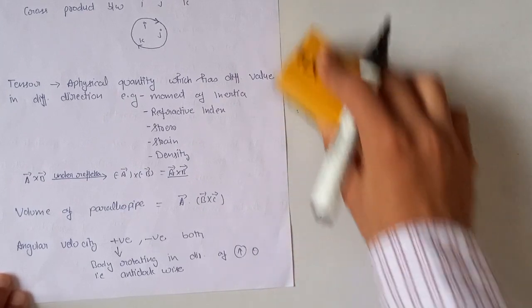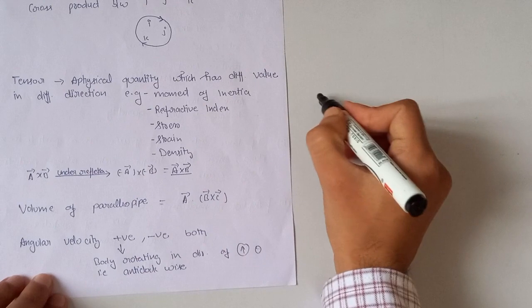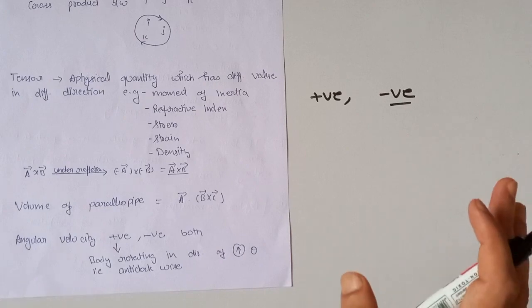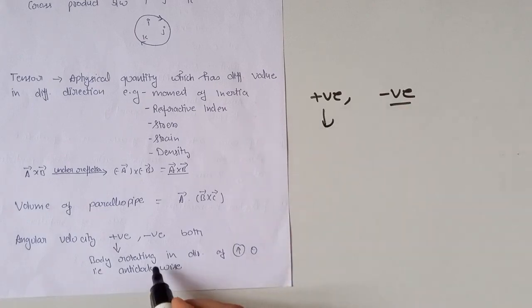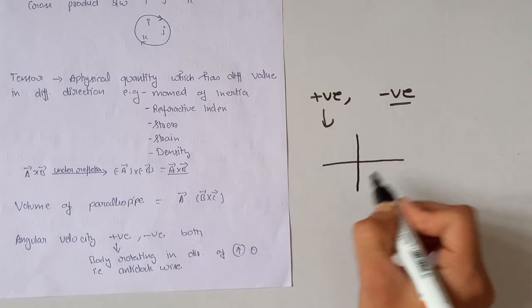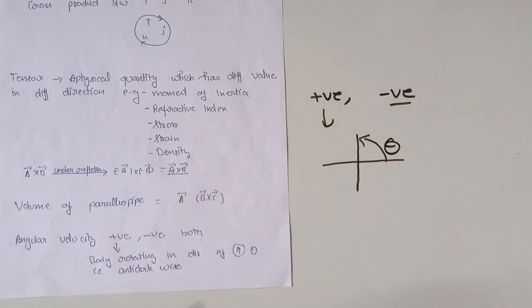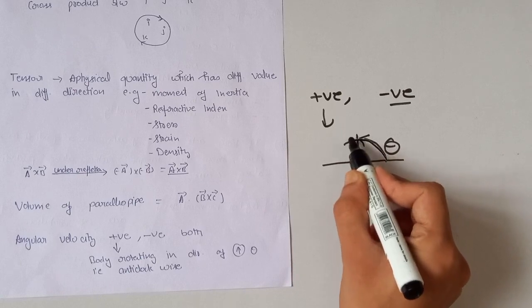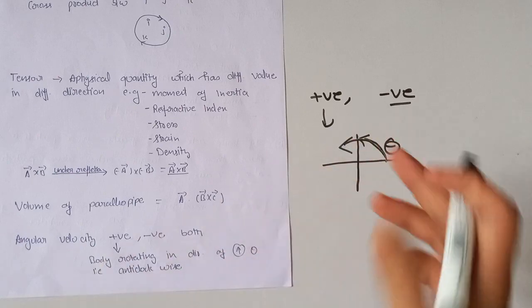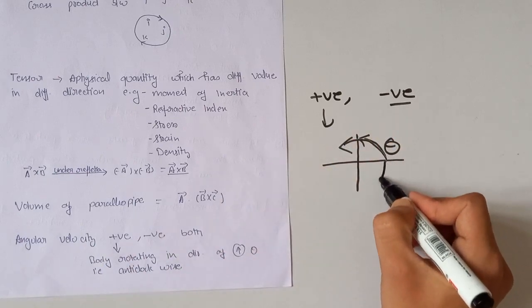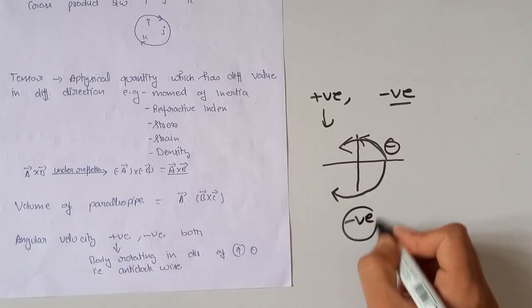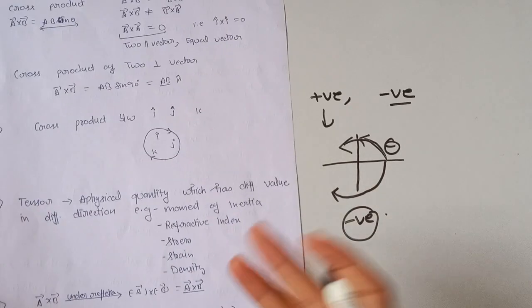The next topic is angular velocity. Angular velocity can be positive or negative. It is positive when the body rotates in the direction of increasing theta — for example, anti-clockwise rotation. It is negative when the body rotates in the clockwise direction. I hope these key points are clear to you.